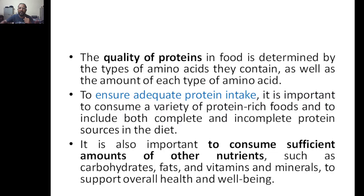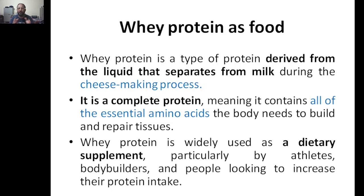One example we are discussing under protein is whey protein. Whey protein is derived from the liquid that separates from milk during cheese-making — it is a byproduct of that process. It is a complete protein, meaning it contains all of the essential amino acids the body needs to build and repair tissues. There are around 21 amino acids, and all of them are present in whey protein.